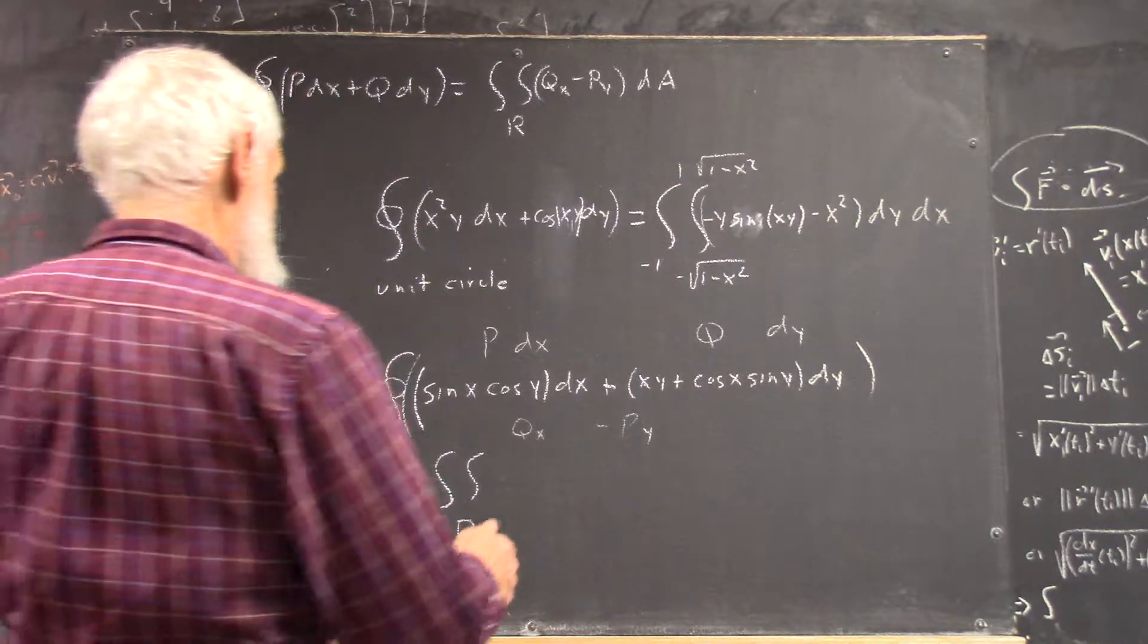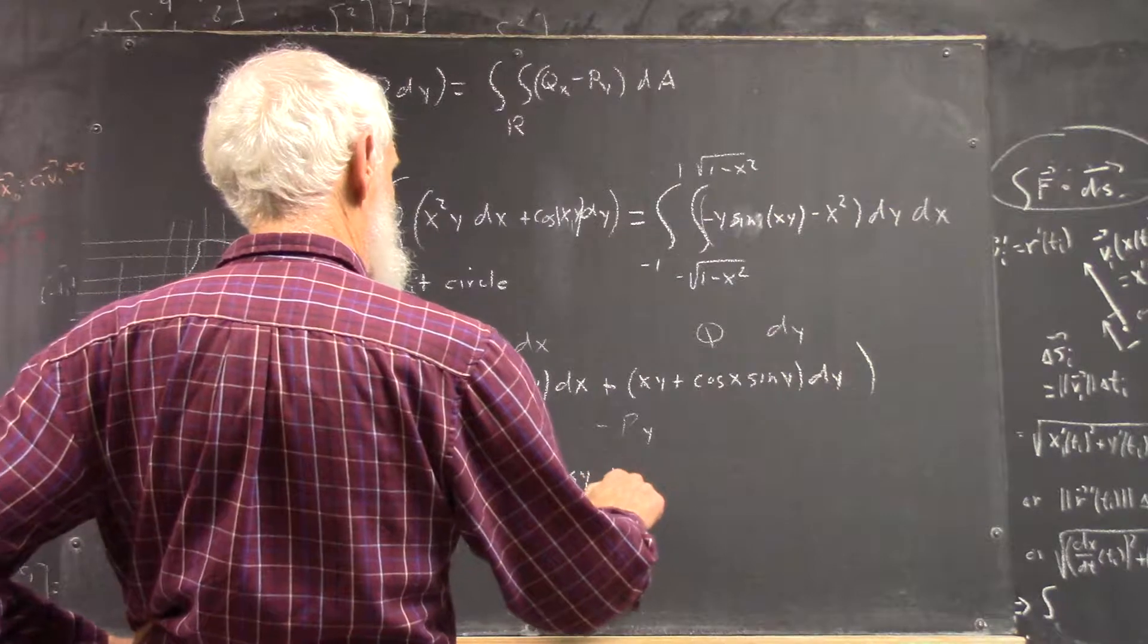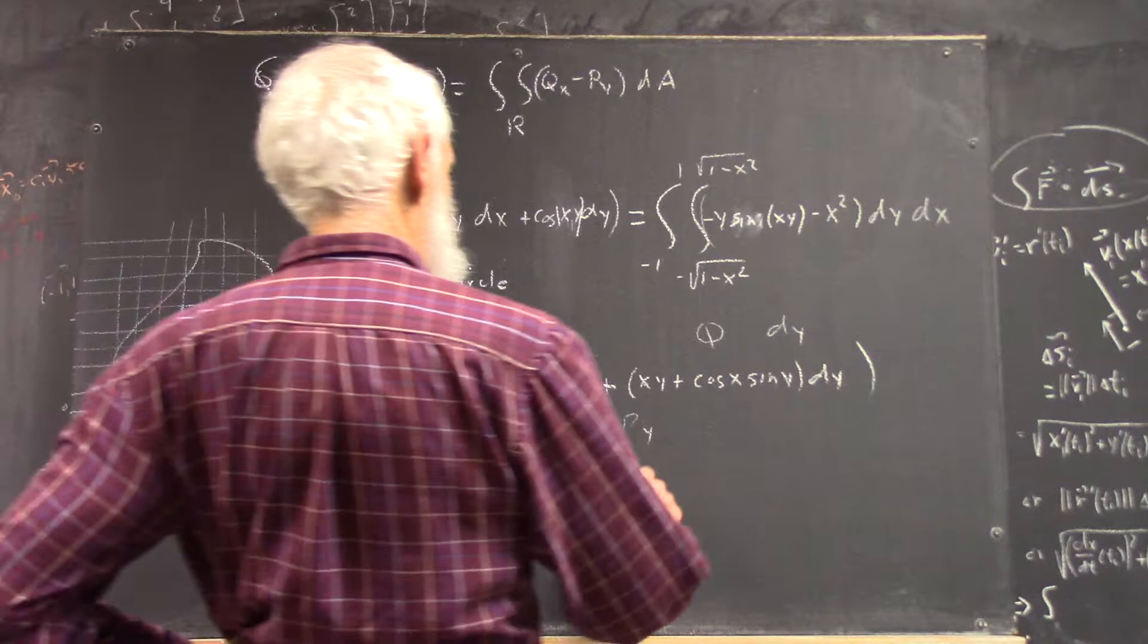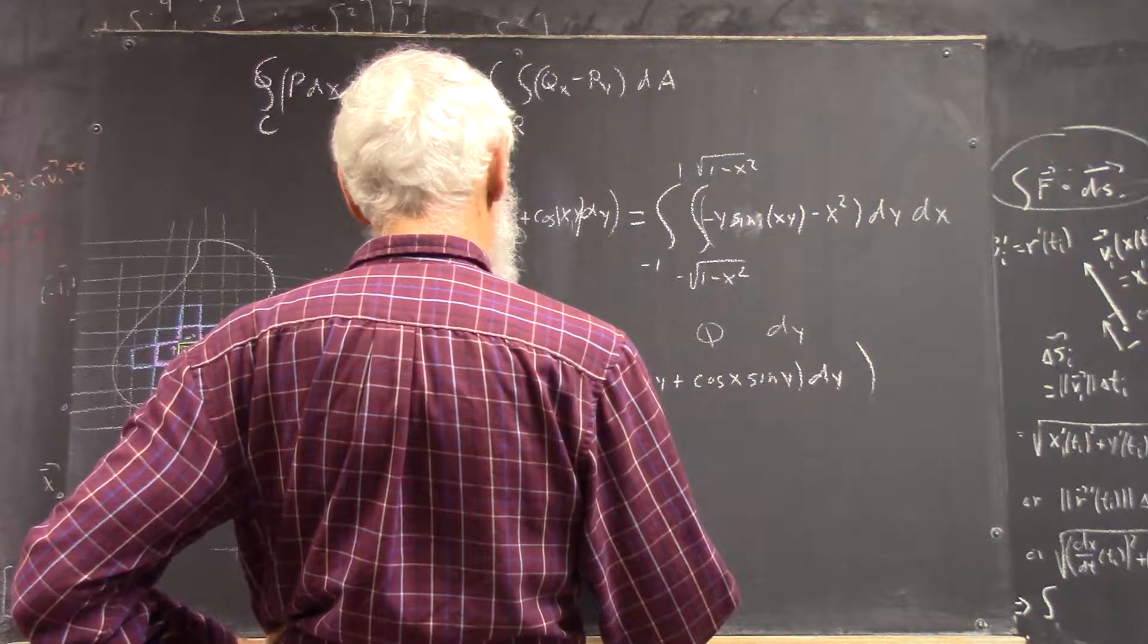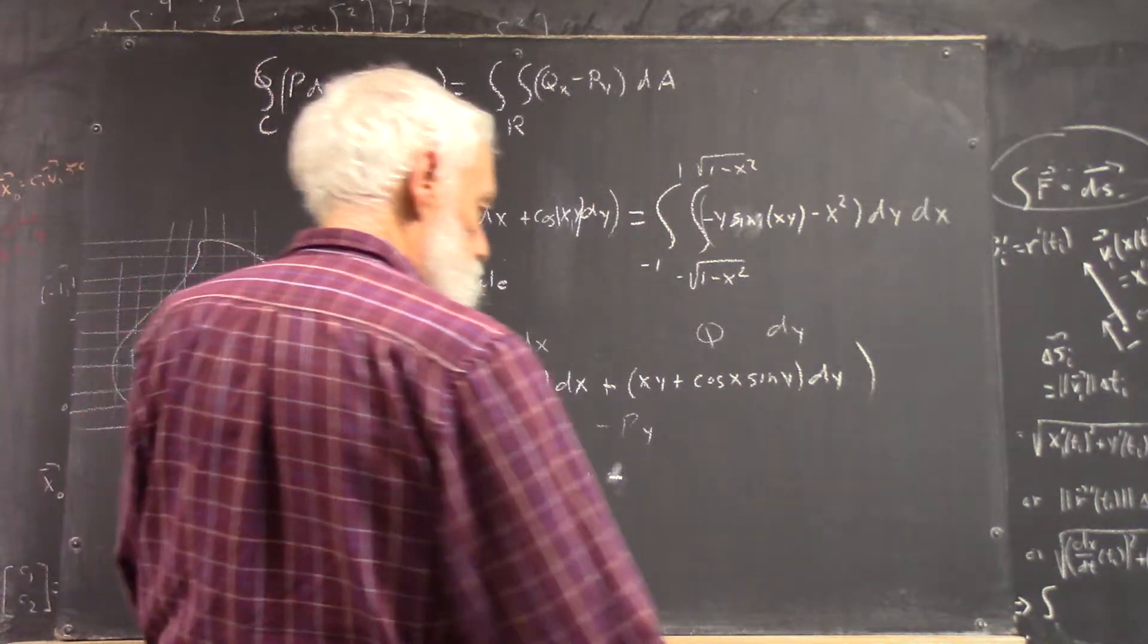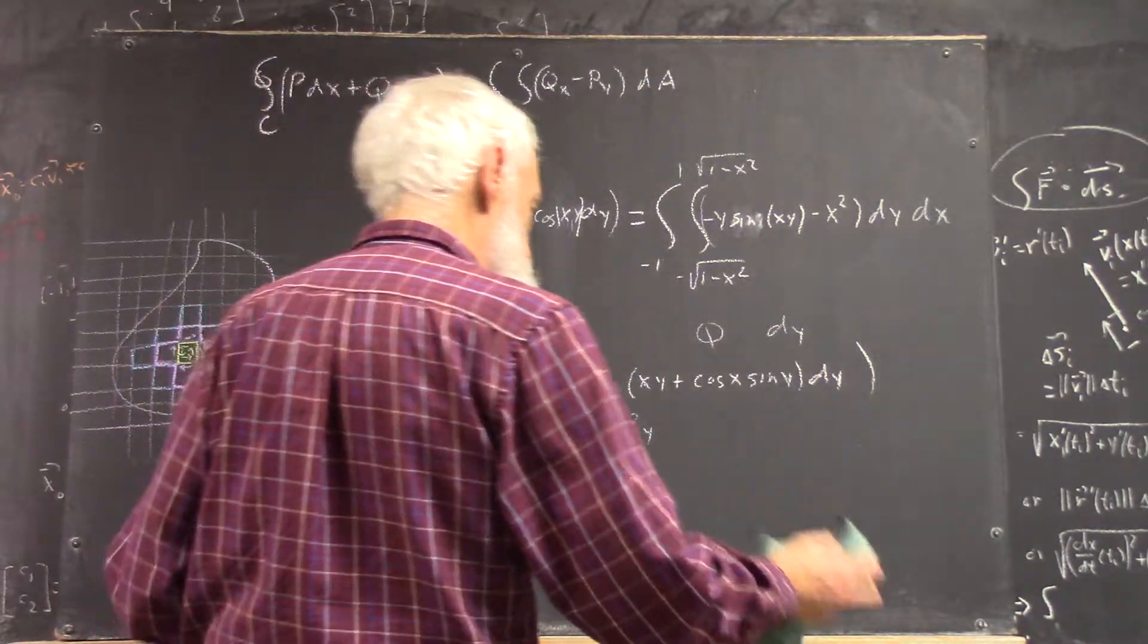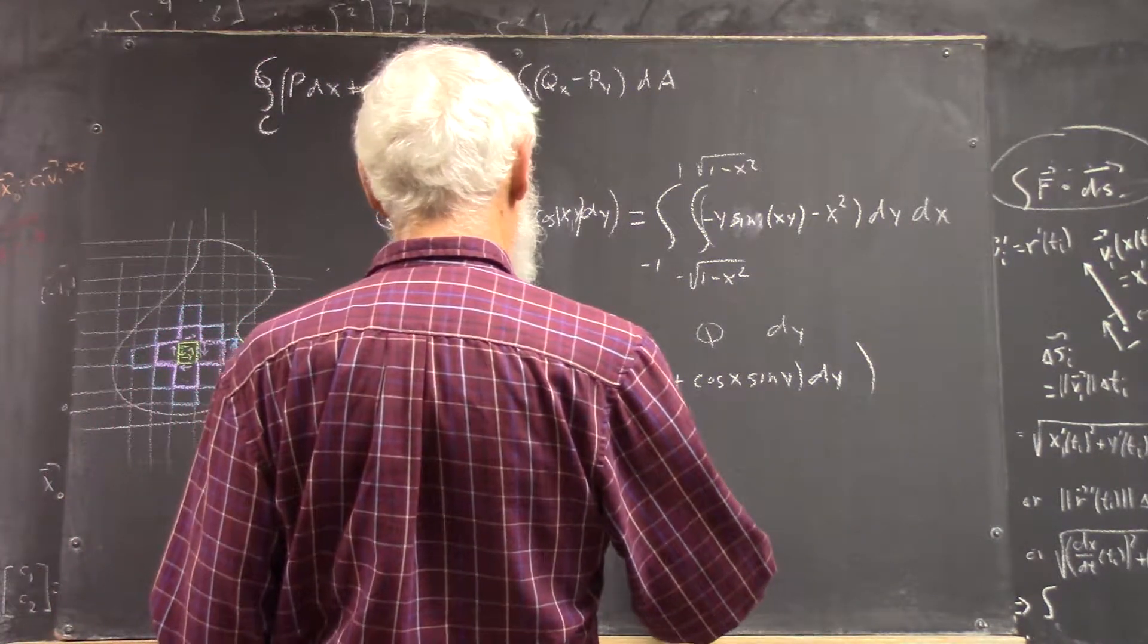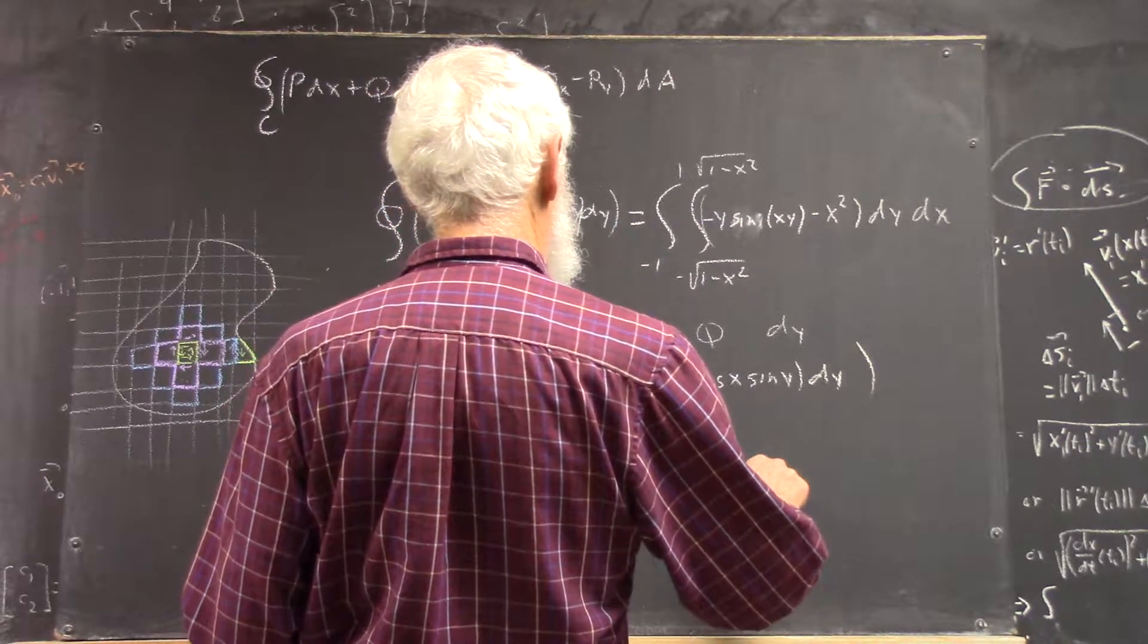Now it's going to be Qx minus Py. Very easy. Qx is cosine x cosine y.